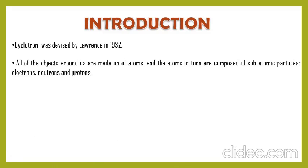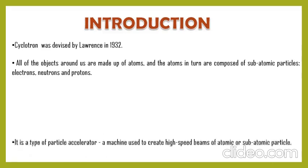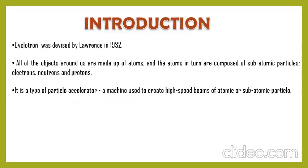Cyclotron basically accelerates subatomic and atomic particles. As we know, the atom consists of subatomic particles like electrons, neutrons, and protons. The cyclotron is basically a particle accelerator and it accelerates subatomic and atomic particles with very high energy or high speed. Particle accelerators are those devices which accelerate particles with higher energy.